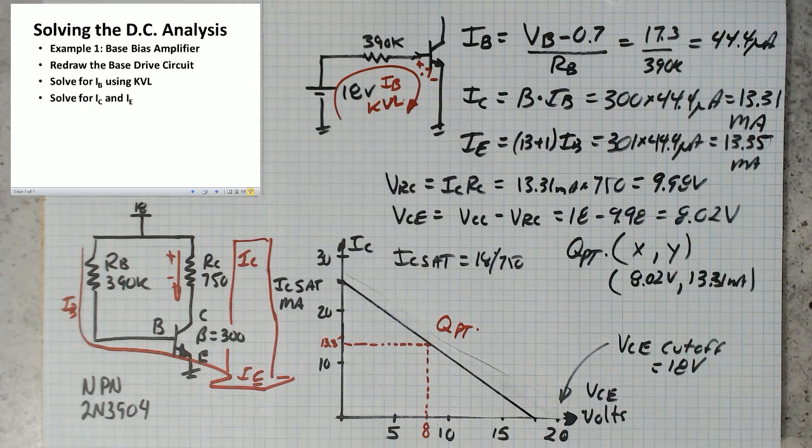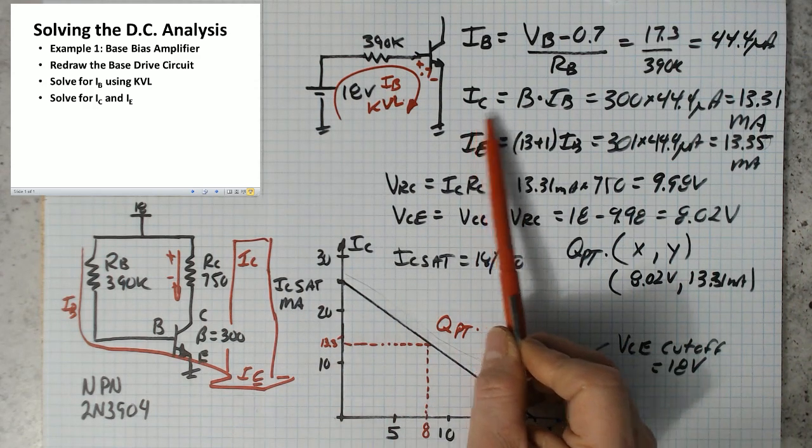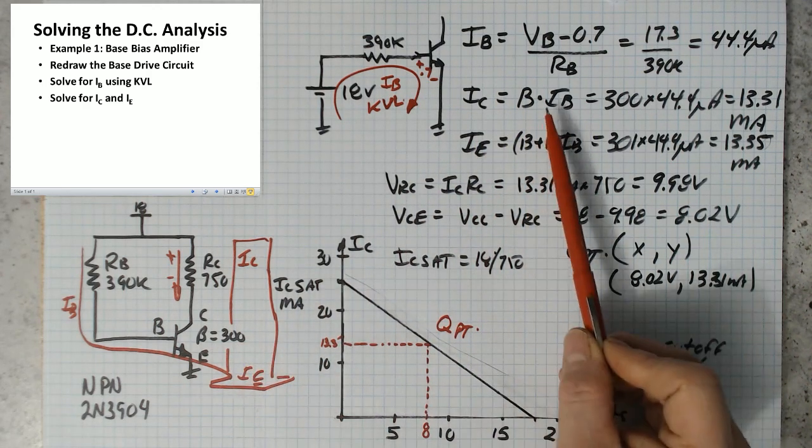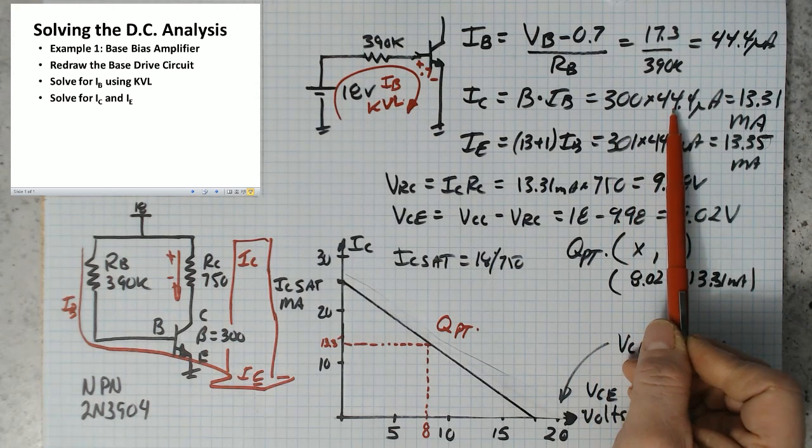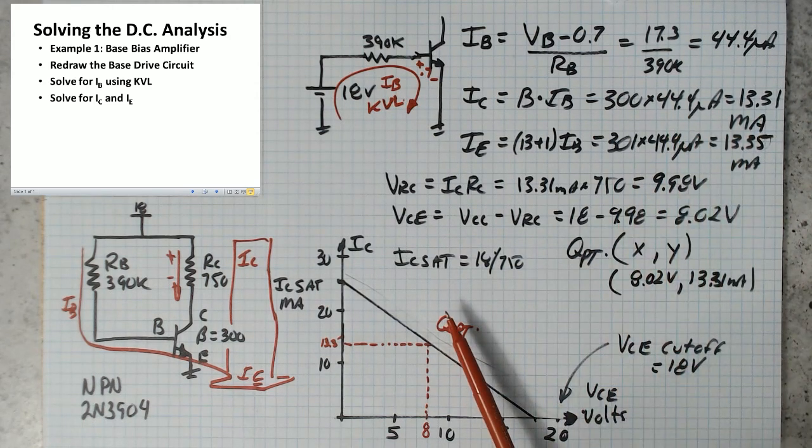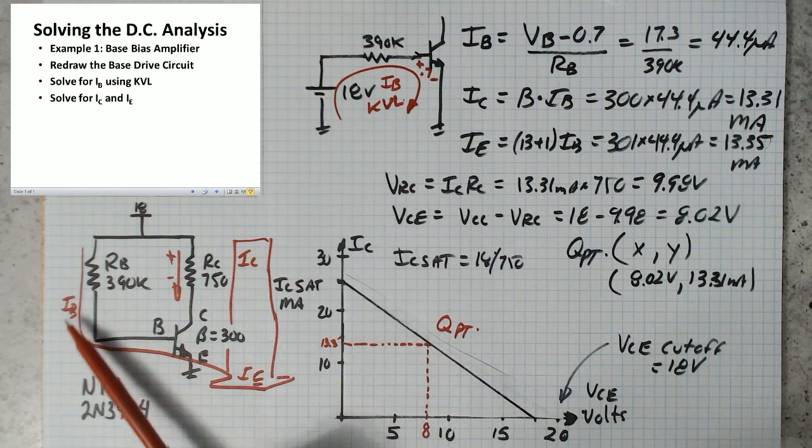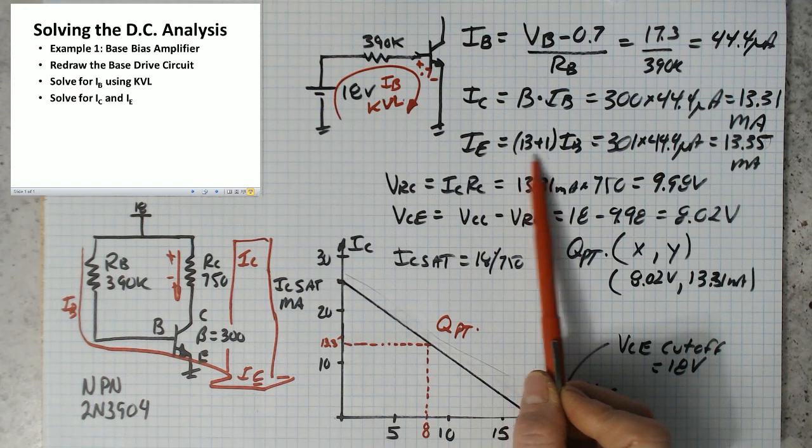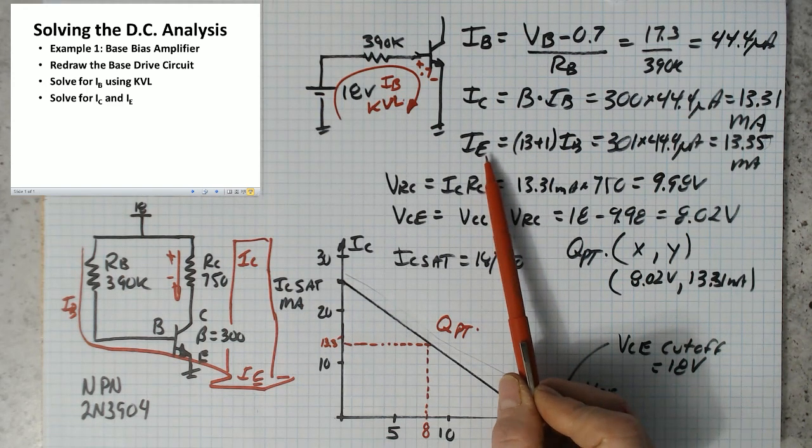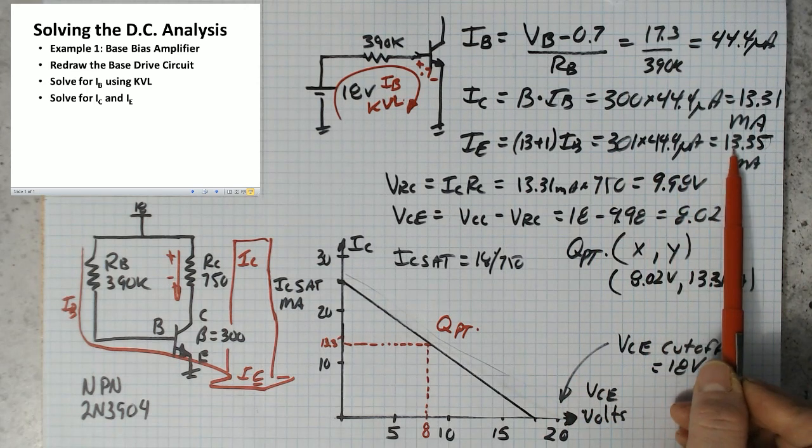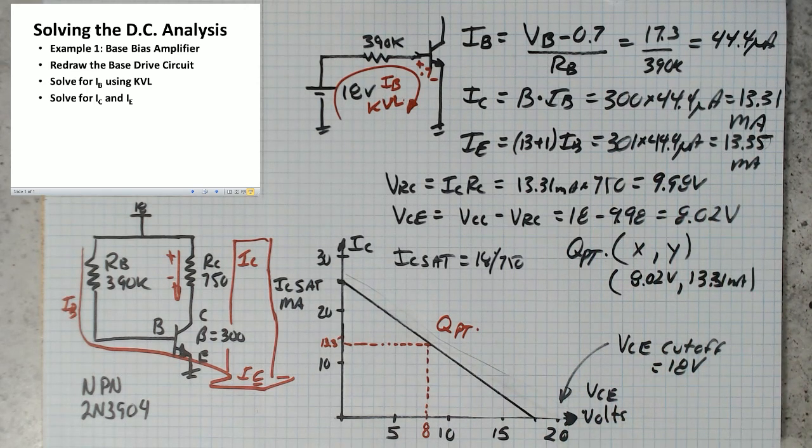The next step is to solve for IC and IE. So IC is just a straight multiple of the base current. The beta is given as 300. So IC is 300 times 44.4 microamps. That's 13.31 milliamps. IE is the combination of the base current and the collector current. So it's just a little bit more. We say IE is beta plus 1 times IB, which is 301 times 44, which is 13.35 milliamps.